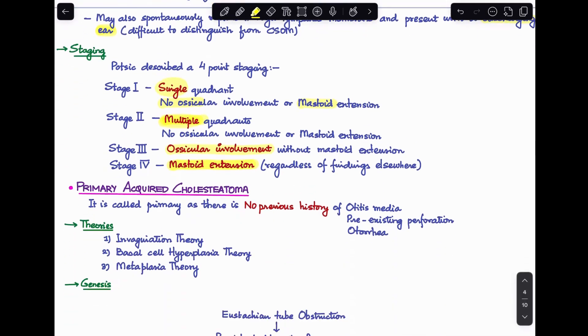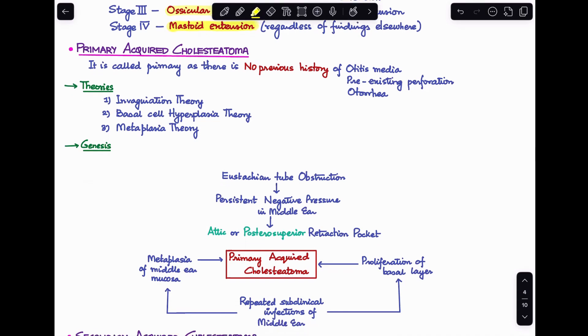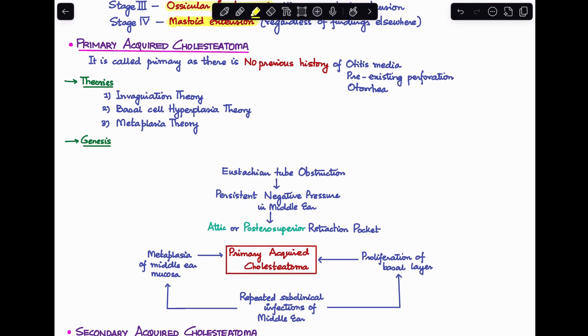Next, we'll discuss primary acquired cholesteatoma. Why is it called primary? It's called primary because here there is no previous history of any otitis media, pre-existing perforation, or otorrhea. The theories that can be used to explain primary acquired cholesteatoma are the invagination theory, basal cell hyperplasia theory, and metaplasia theory.